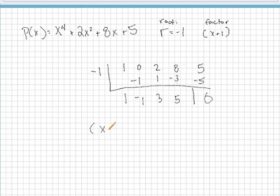And the polynomial factors into x plus 1. We're going to drop the degree of x down 1 from the original, so it'll be x to the third minus x squared plus 3x plus 5.